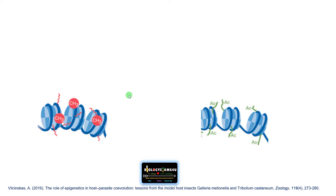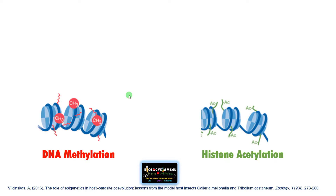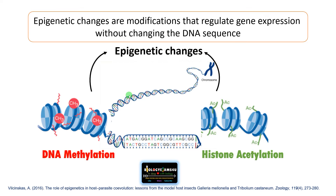Hi friends, this is a very short video on the difference between DNA methylation and histone acetylation. Both are epigenetic changes. Epigenetic changes are modifications that influence gene expression without changing the DNA sequence. There is no change in DNA sequence, but gene expression is either turned on or turned off by means of epigenetic changes. Classical examples include DNA methylation and histone acetylation.